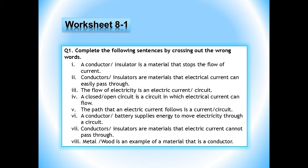Number 6 is: a conductor or battery supplies energy to move electricity through a circuit — the wrong word is conductor, so cross it out. Number 7: conductors or insulators are materials that electric current cannot pass through — the wrong word is conductors. Number 8: metal or wood is an example of a material that is a conductor — wood is the wrong word. So we have done question number 1.